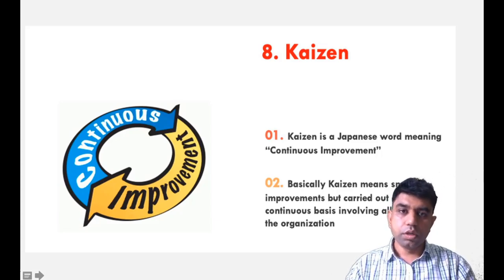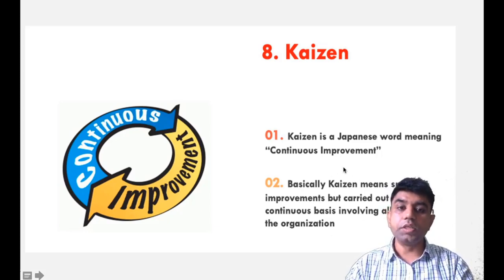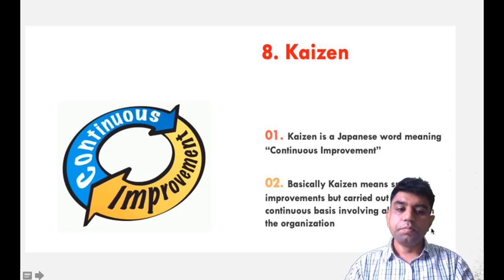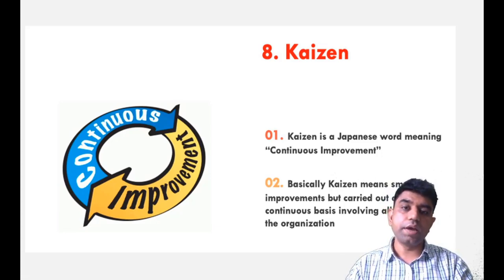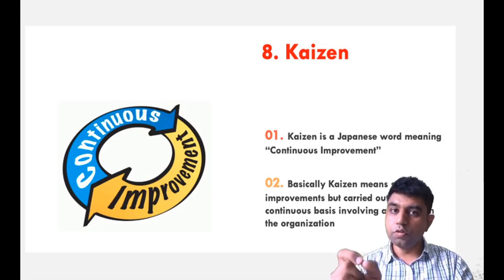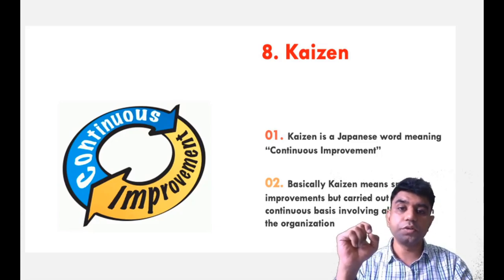Kaizen is a Japanese word, and in their terminology it means continuous improvement. Basically, Kaizen means small improvements carried out on a continuous basis, involving all people in the organization. They want involvement of each and every person throughout the organization, and they believe that there should be continuous improvement without any shortage or stop in between — whether it is a very small improvement, you still need to go for that improvement.